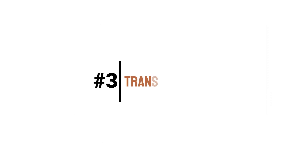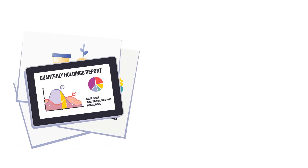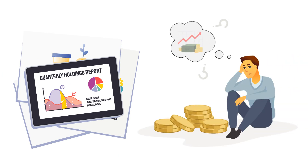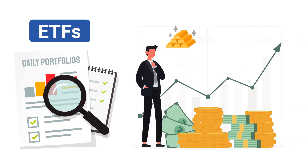Three: transparency. Hedge funds and even mutual funds operate in a not-so-transparent manner compared to ETFs. Hedge funds, institutional investors, and mutual funds usually report their holdings only on a quarterly basis, leaving investors without a clear idea of whether the fund is following its stated investment strategy and adequately managing risks. In contrast, ETFs generally disclose their daily portfolios, which helps the investor maintain better awareness of exactly how his or her money is being invested.